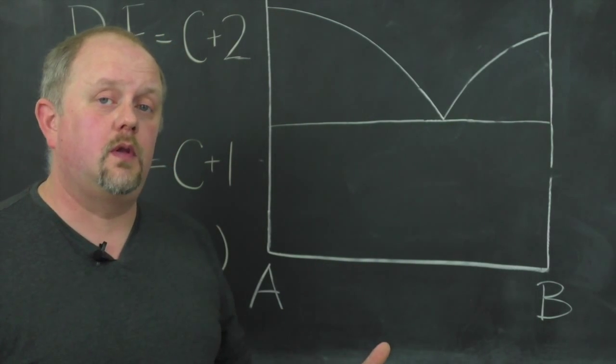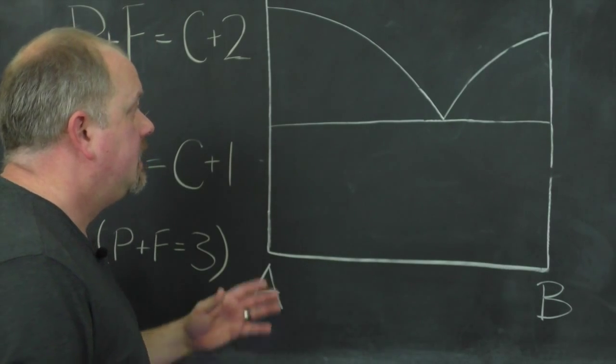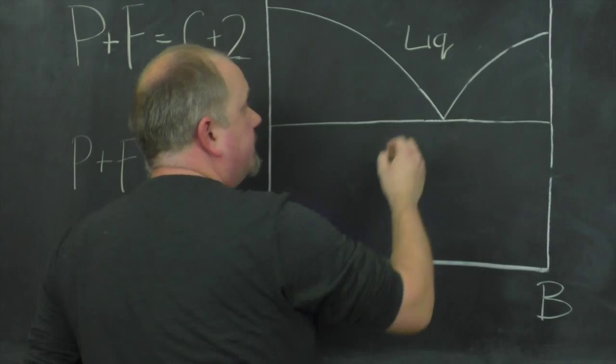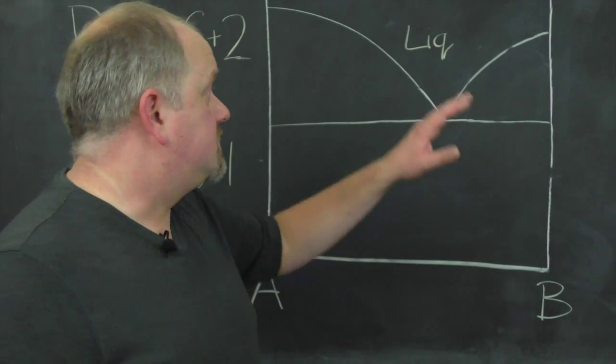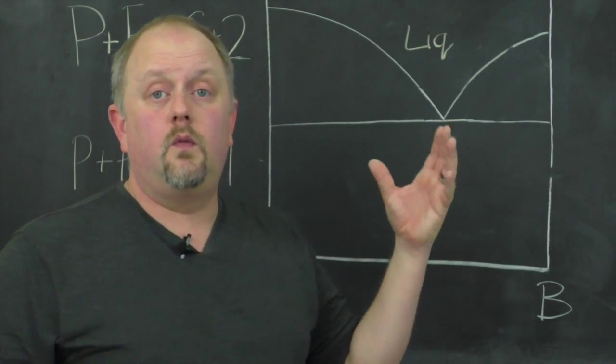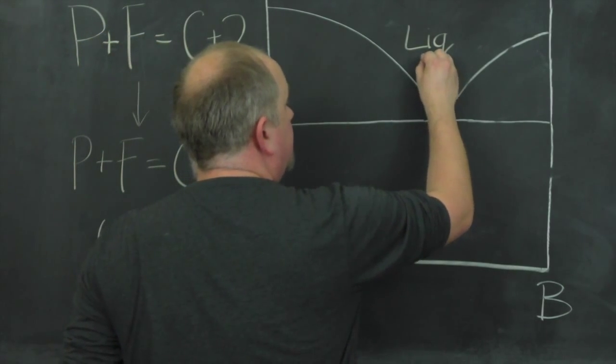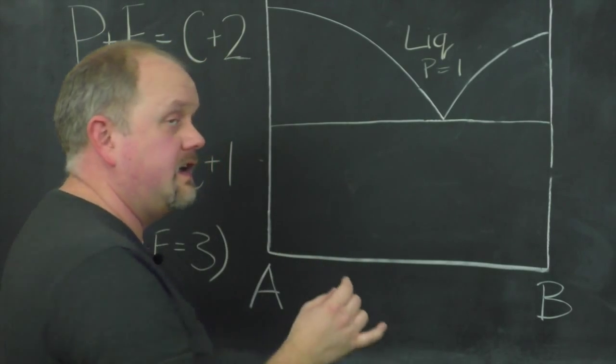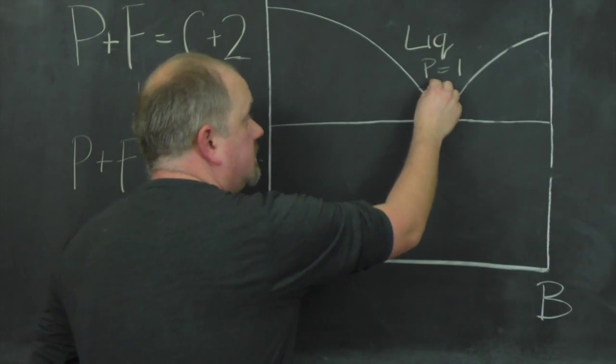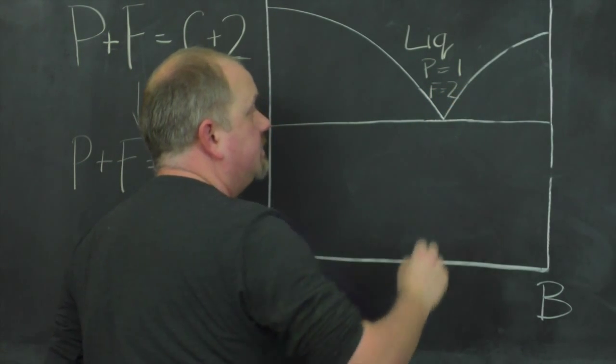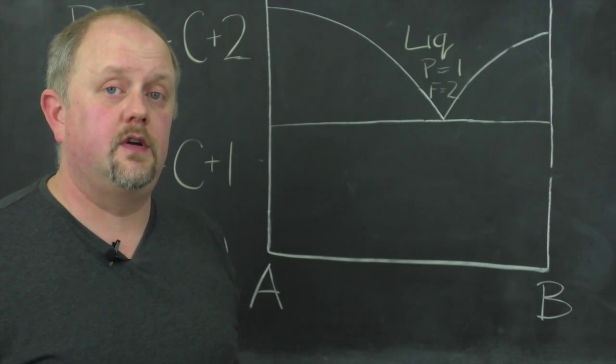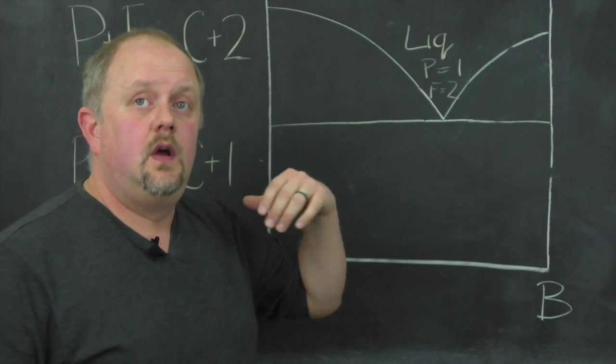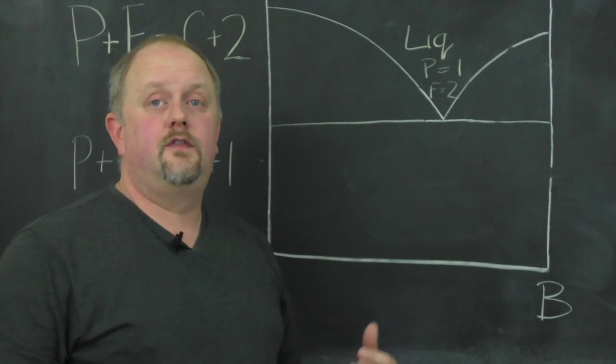Because we can know what the conditions of equilibrium should be at every point. So for example, if we have the liquid phase up here, at all points in this phase field we just have a single phase, liquid. So P equals 1. That means P plus F equals 3. That means that the number of degrees of freedom must be 2 in the liquid field. And that means that for every temperature and composition we have a different state for the liquid.